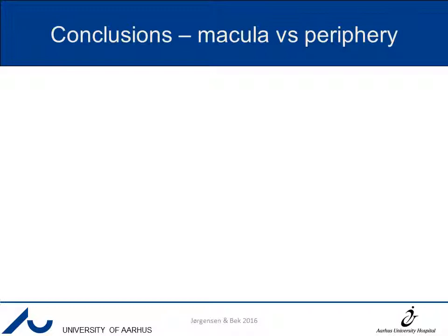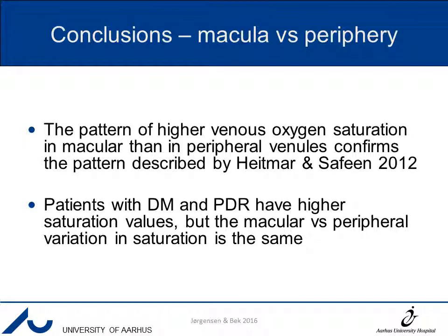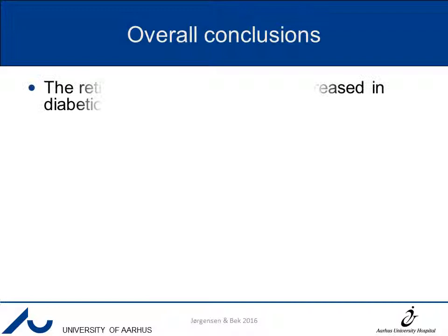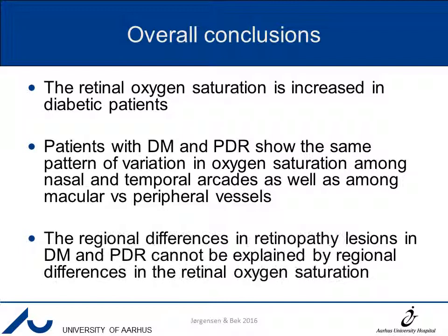Conclusions on the macular versus peripheral part: the pattern of higher venous oxygen saturation in macular than in peripheral venules confirmed the pattern described by Hödman-Sephene in 2012. Patients with maculopathy and proliferative diabetic retinopathy have higher saturation values, but the macular versus peripheral variation in saturation is the same. Overall conclusions: retinal oxygen saturation is increased in diabetic patients, and both diabetic patient groups show the same pattern of variation among nasal and temporal arcades as well as among macular and peripheral vessels. The regional differences in retinopathy lesions cannot be explained by regional differences in retinal oxygen saturation.